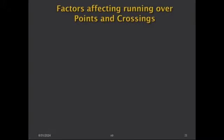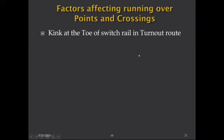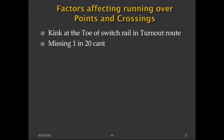Factors affecting running over points and crossings: First, the kink at the toe of switch — the turnout route stock rail used to have a slight kink at the theoretical toe of switch to ensure proper housing. When a train moves on the loop line side, because of this slight kink there will be some jolting. Second, the missing 1-in-20 cant — we do not provide 1-in-20 cant in the points and crossing portion because the crossing is common for both main line and loop line movement, so it must be a compromise.